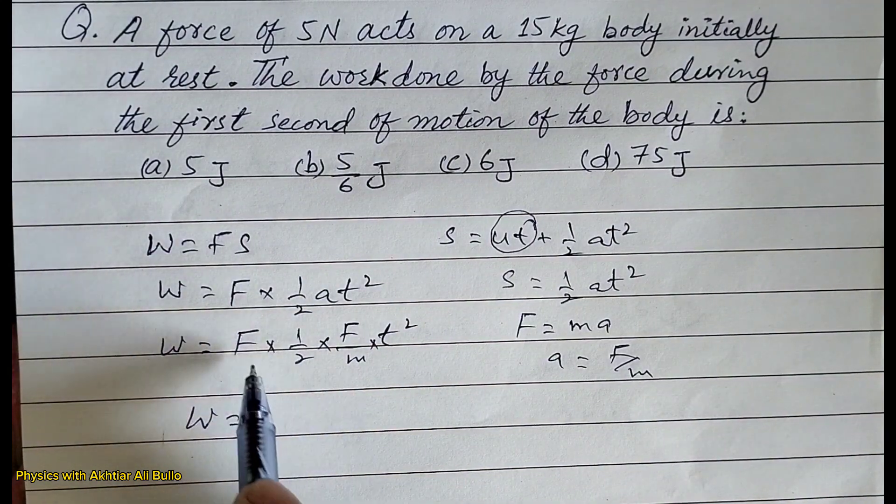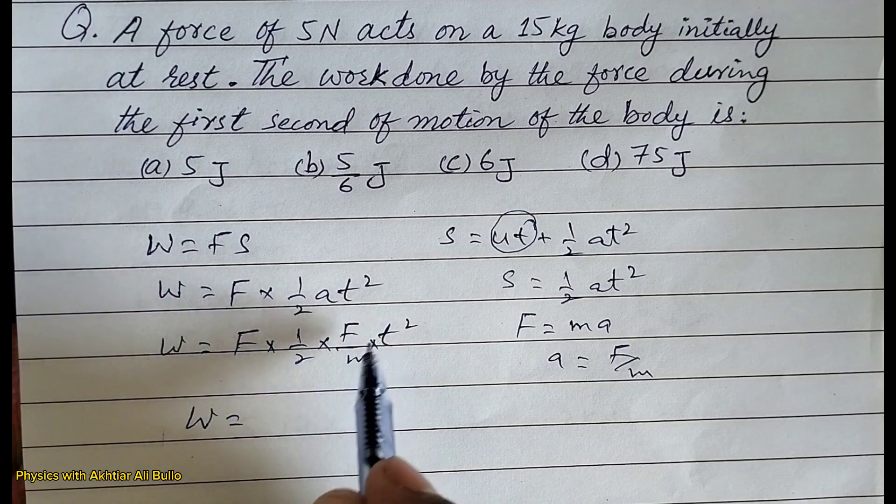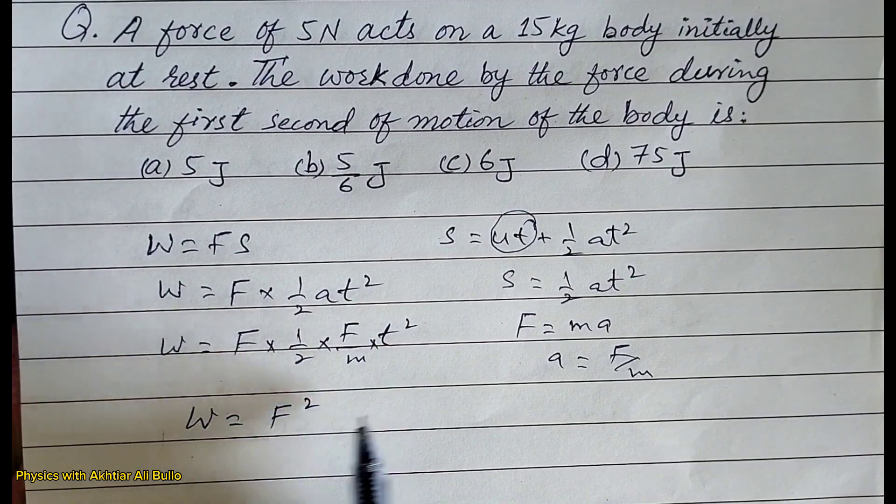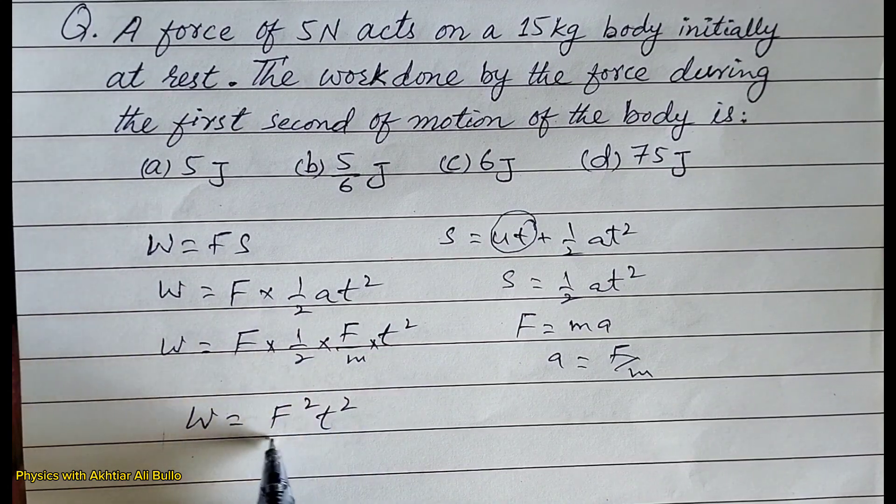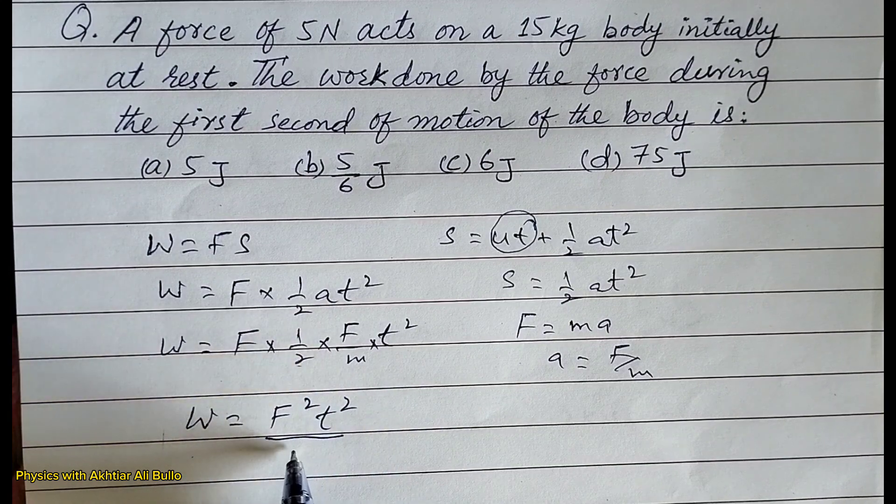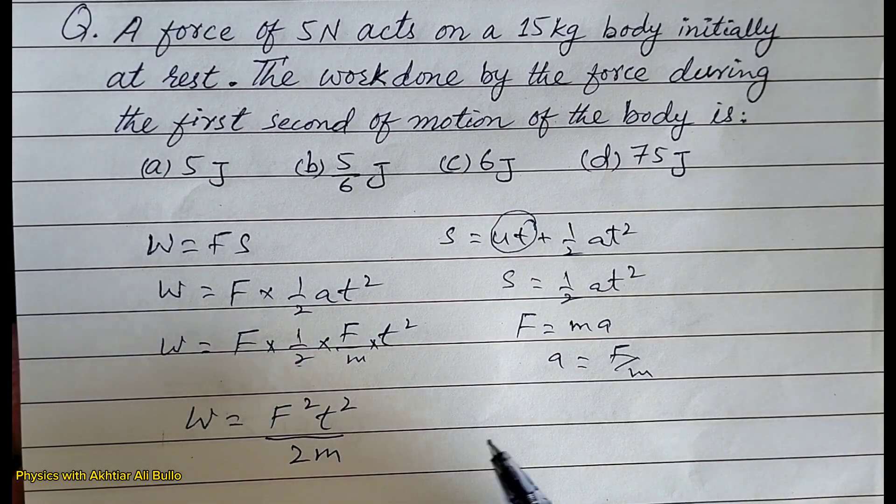So work done will be equal to f into f. It will be f squared into t squared upon 2 into m, which is 2m.